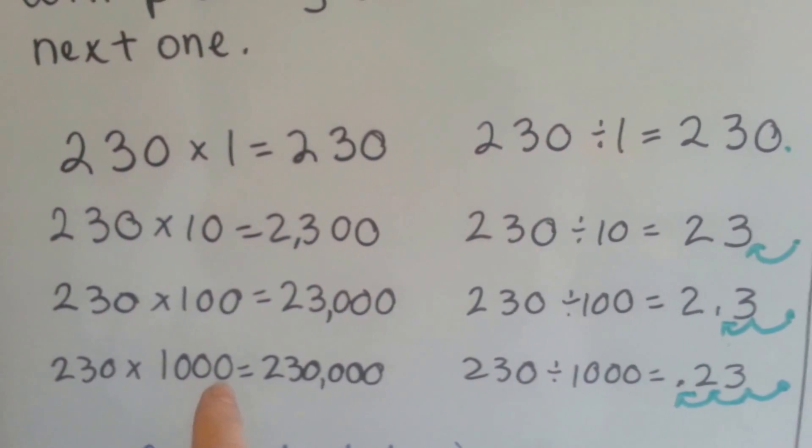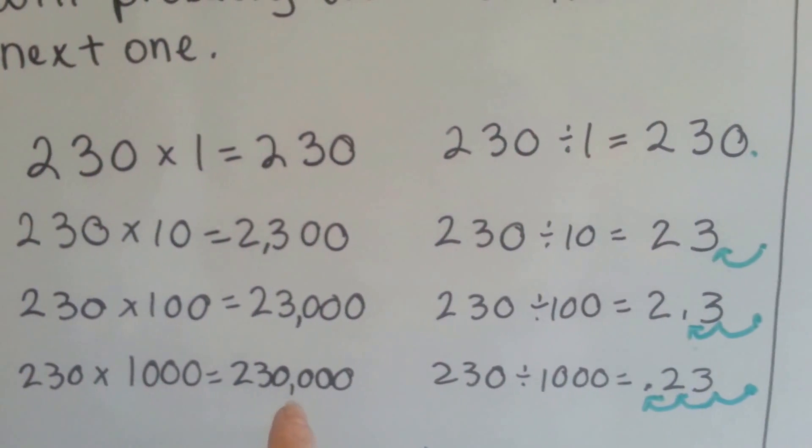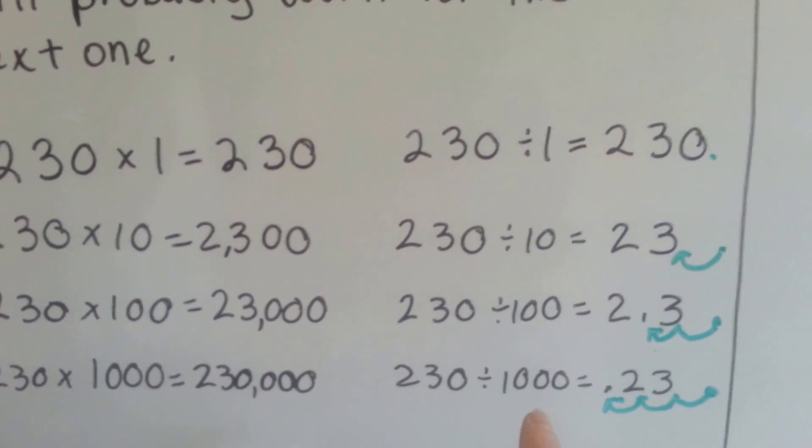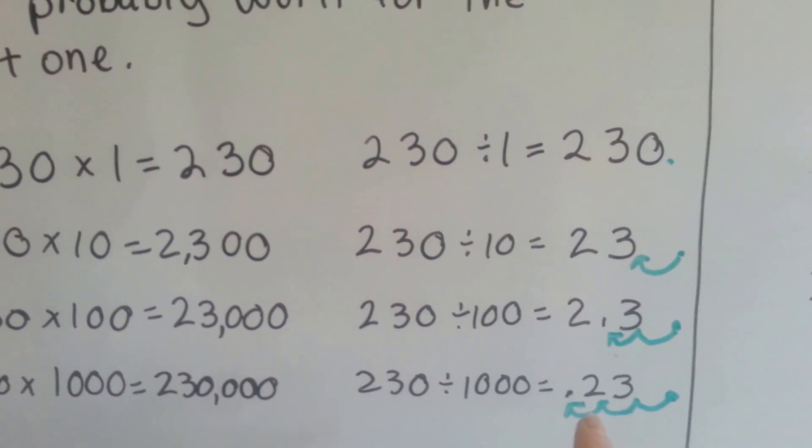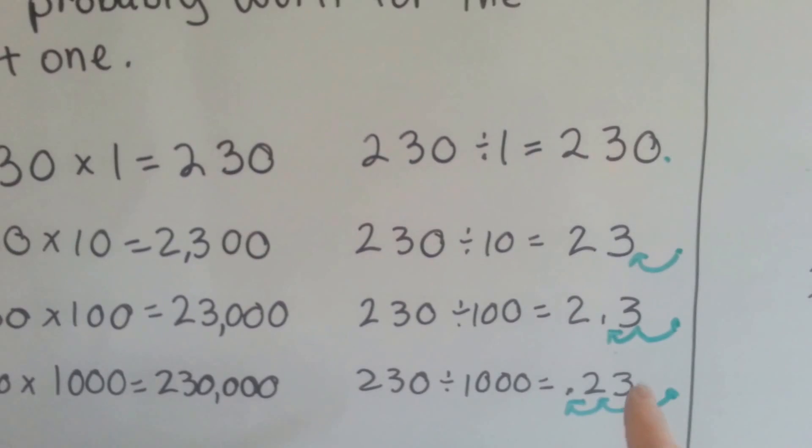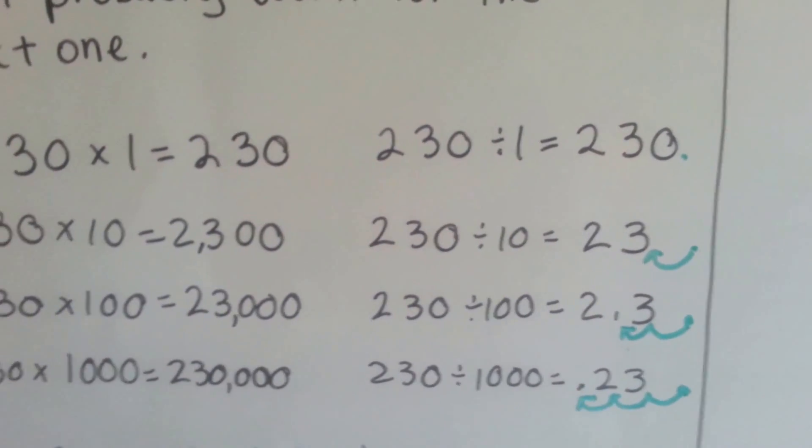230 times 1,000 is 230,000. 230 divided by 1,000 is 23 hundredths. There's three 0's there that we divided by, so we're now moving over three spots, see?